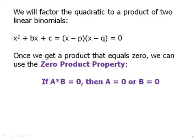Because once we have a product that equals zero, we can apply this mathematical law, the zero product property. The zero product property says if a times b equals zero, if a product of two things equals zero, then either one is zero or the other is zero.